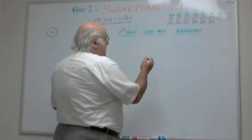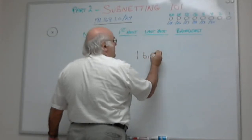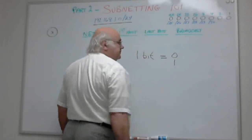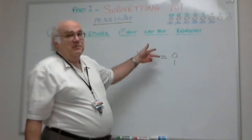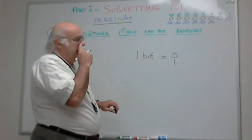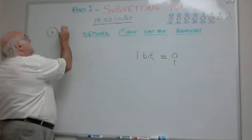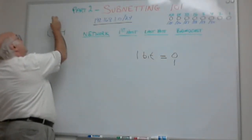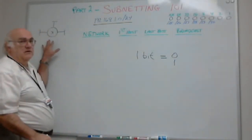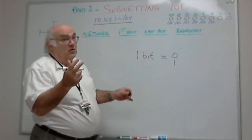When we took that one bit, we could have zero and one — two different numbers, two different networks. But what if I need three networks? Off of my router here, I want to create three networks. With one bit I can't do it, so maybe two bits.